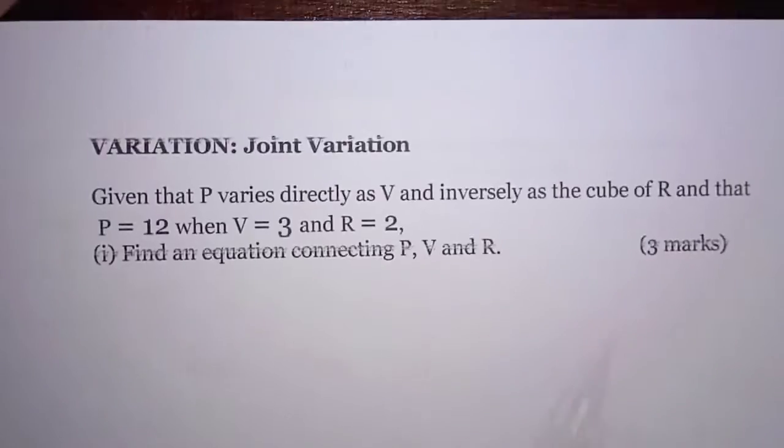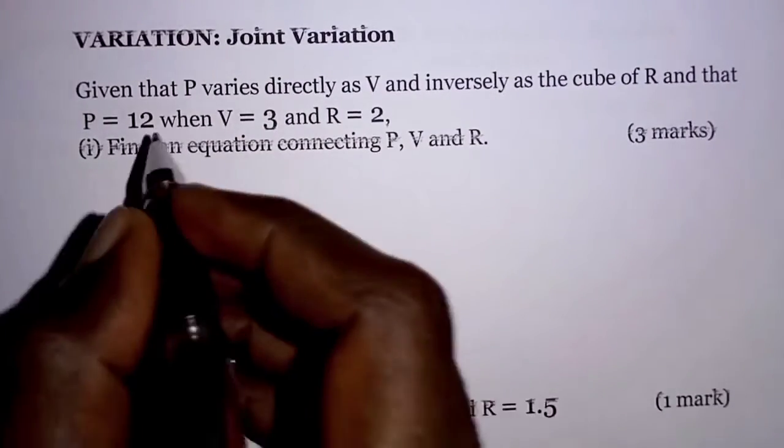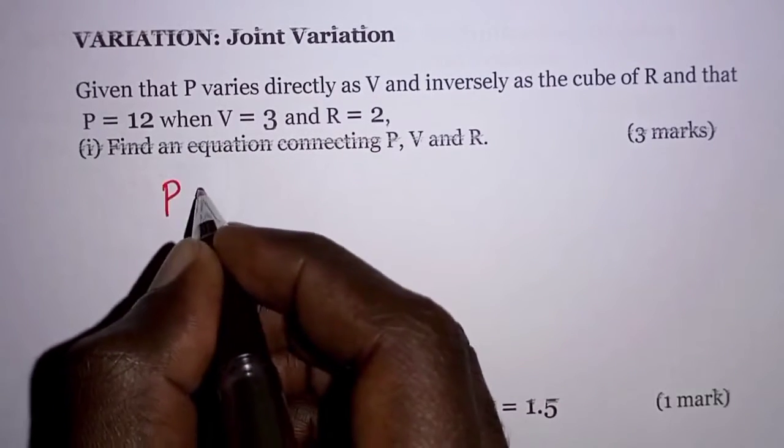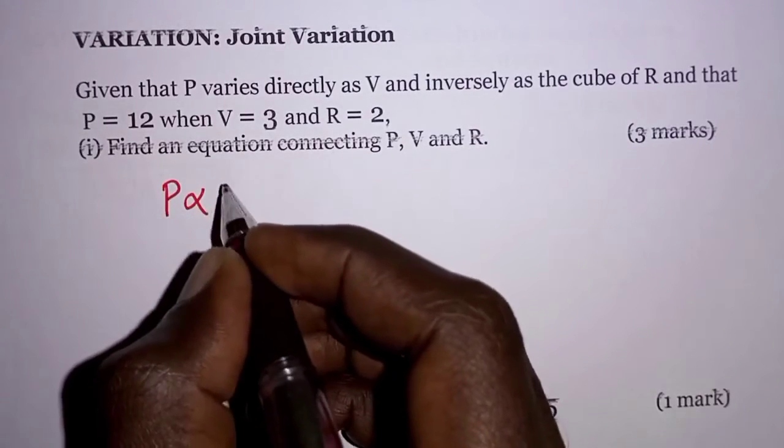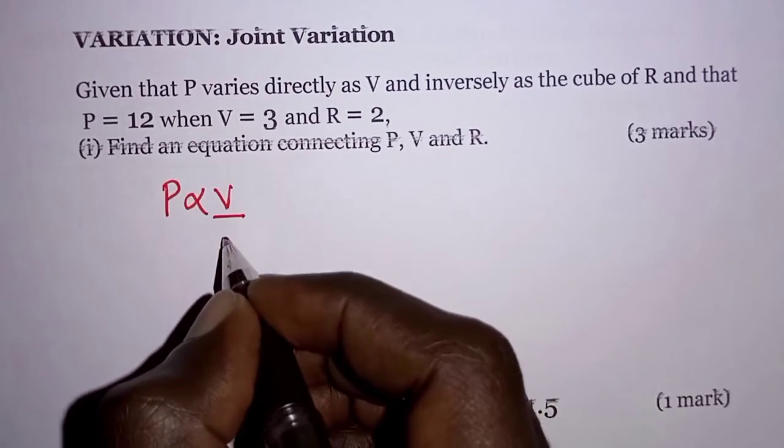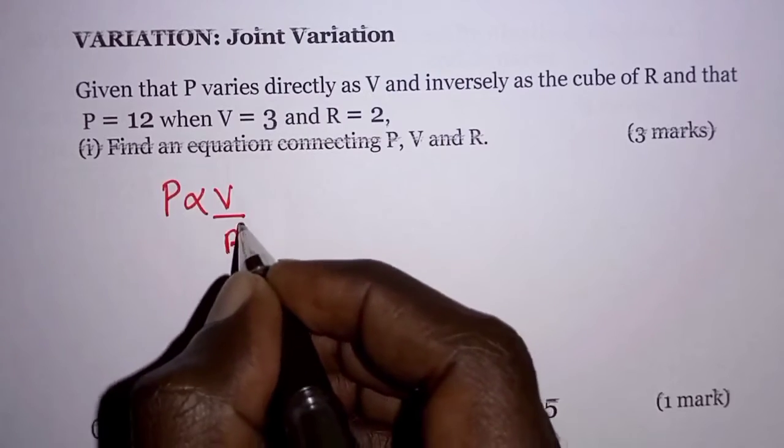So we are told that P varies directly as V, so P varies as V, and inversely as the cube of R.